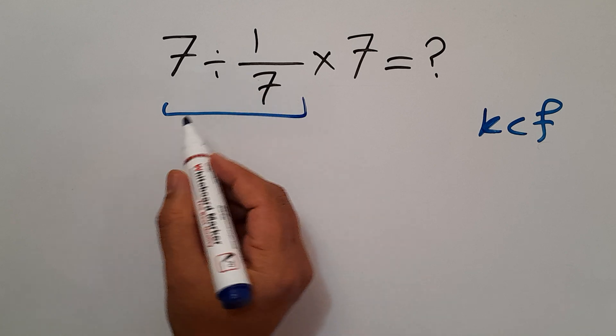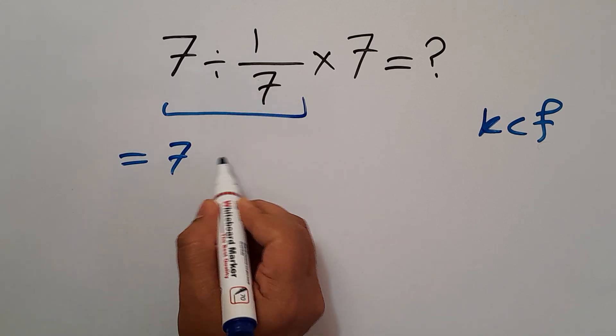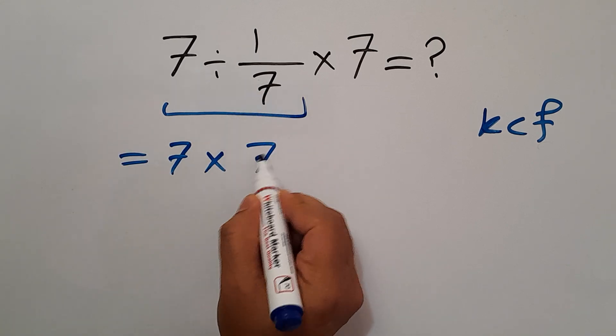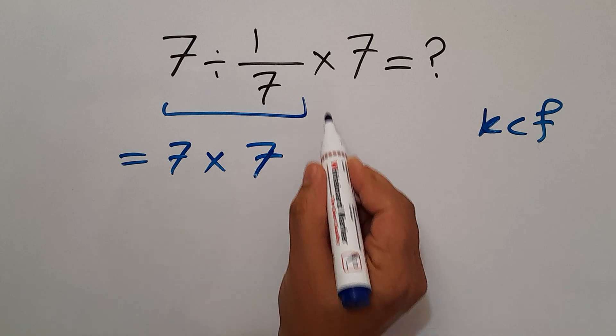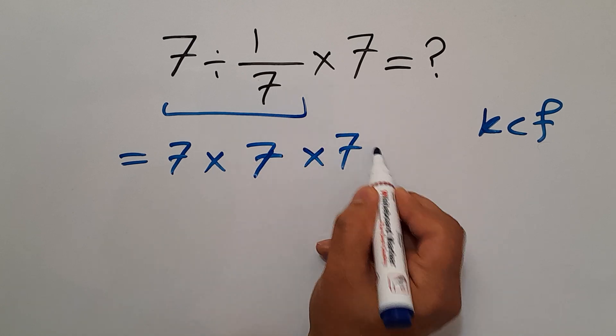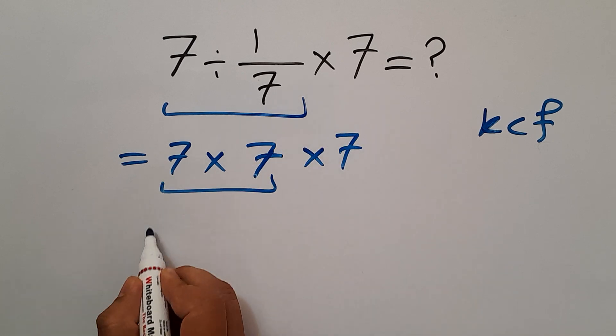So we can write 7 times 7 and again times 7. 7 times 7 equals 49.